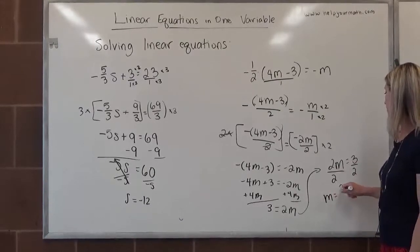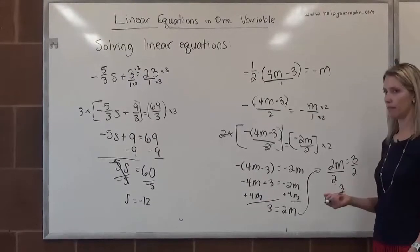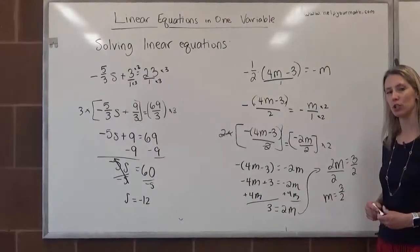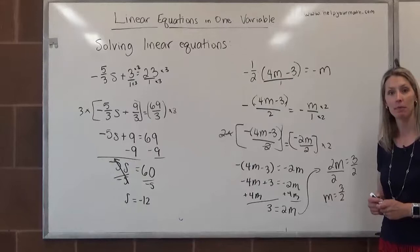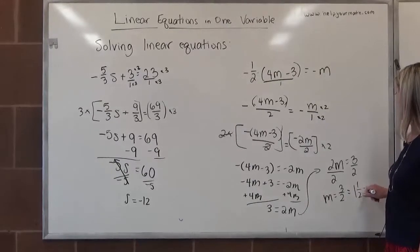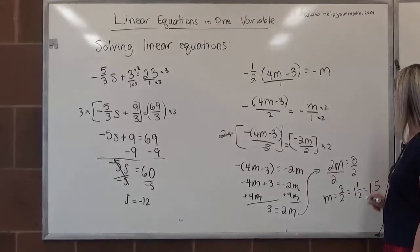We have m equals 3 over 2. If you're my student, you can leave 3 over 2. I'm perfectly fine with that. Some professors do prefer that you either convert it to a mixed number, in which case it would be 1.5, or if you type it in the calculator, you get 1.5, and that's fine too.